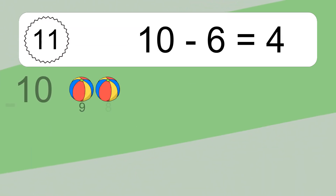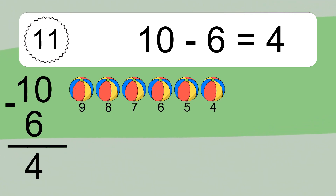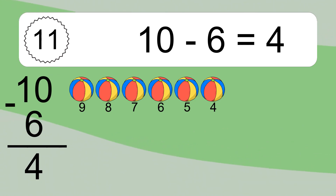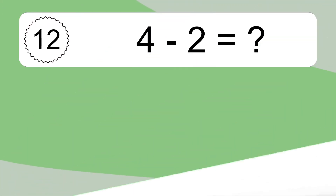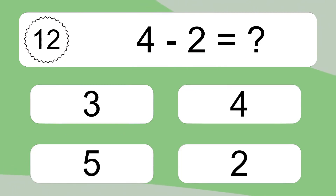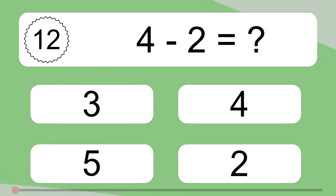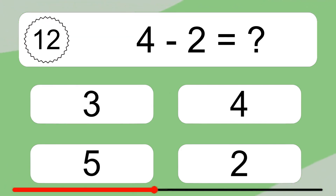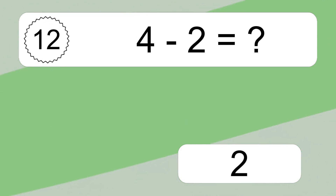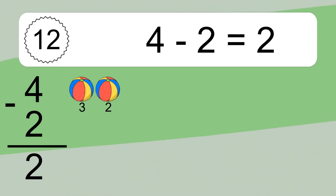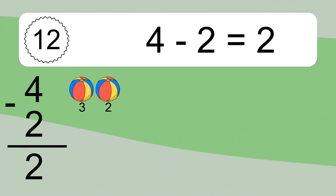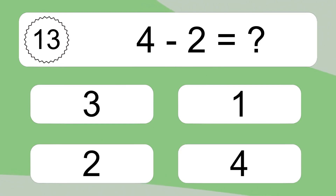Ten minus six equals what? Ten minus six equals four. Let's count it: nine, eight, seven, six, five, four. Four minus two equals what? Four minus two equals two. Let's count it: three, two.